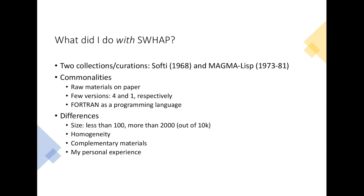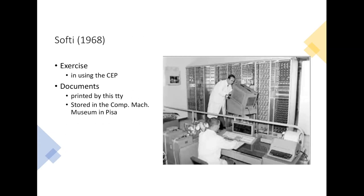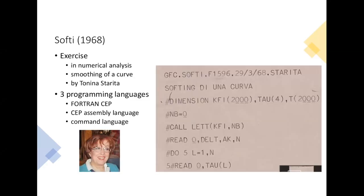So what is Softy? It's essentially an exercise in using the CEP. The CEP is this old computer that was developed in Pisa, and I think that Pierre saw it when he was in Pisa last time. So the documents that I worked on are essentially printed on the prototype that you see there in the corner, and they are stored in the Computing Machinery Museum in Pisa. It was also an exercise in numerical analysis, a very small exercise—smoothing of a curve—and was done by Tonina Starita in her first attempt to use the CEP.